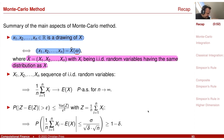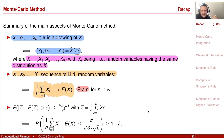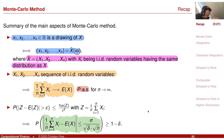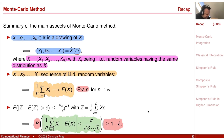Our convergence result was that the time average converges to the expectation, P-almost surely and in probability. The Chebyshev inequality gave us a nice error bound: the probability that we stay within the interval is prescribed to be larger than one minus delta, and the interval shrinks as one divided by the square root of n. So our convergence rate was one divided by square root of n.